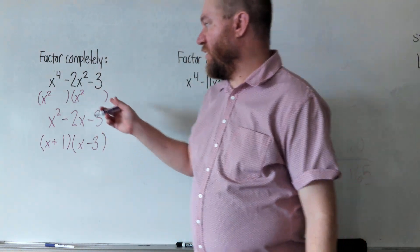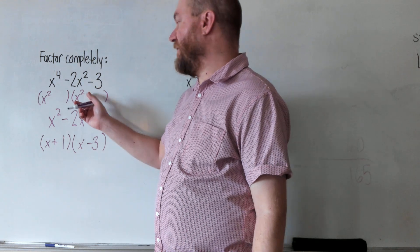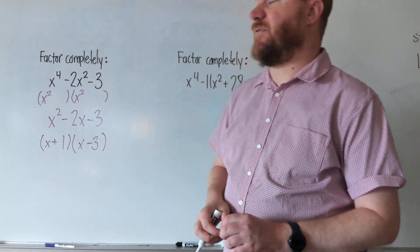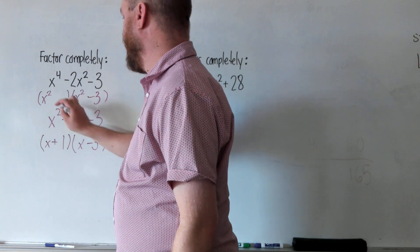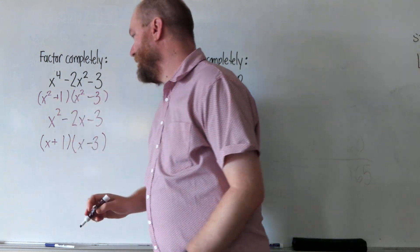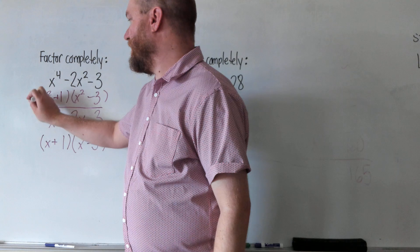And same question, what are two numbers that multiply to negative 3 that add up to negative 2? The answer is still negative 3 and positive 1. Okay, so that's the answer to this one.